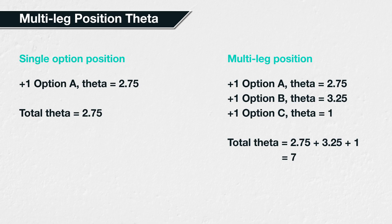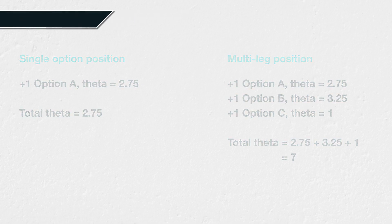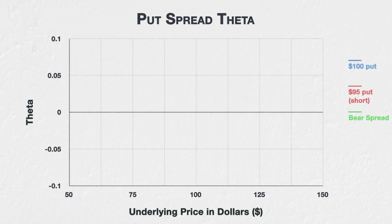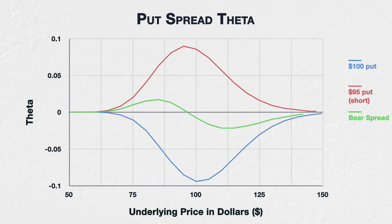Just like we discussed in section 8 with respect to delta, you can also sum the theta of each individual option in the portfolio to get the total theta. Let's look at a simple multi-leg option position: a bear put spread. This position consists of purchasing one put option, then selling another put option with a lower strike price, but both with the same expiration date.